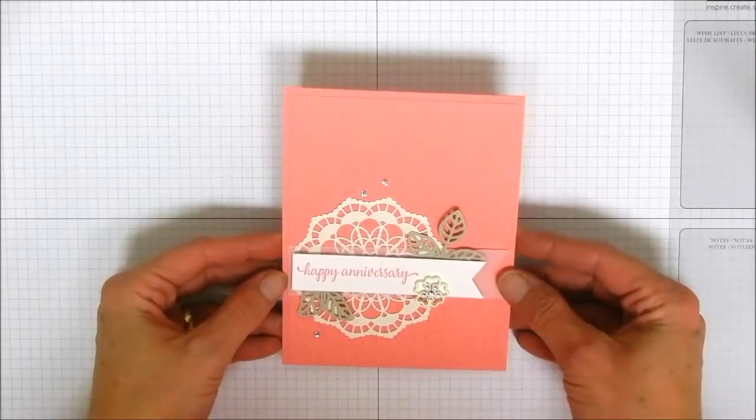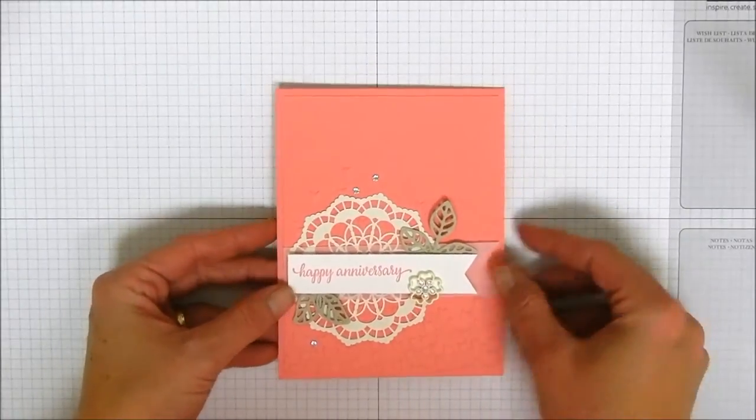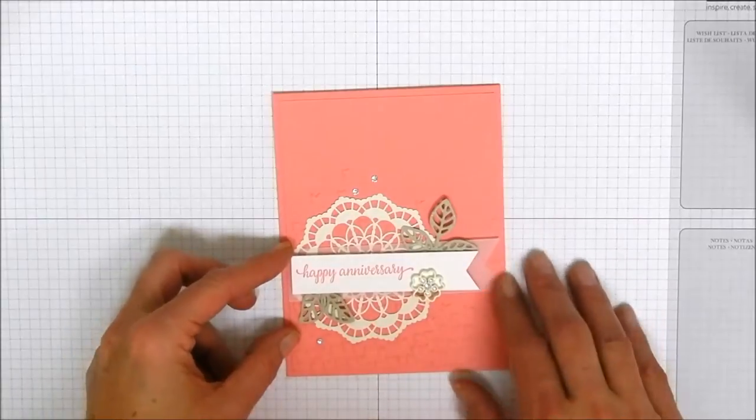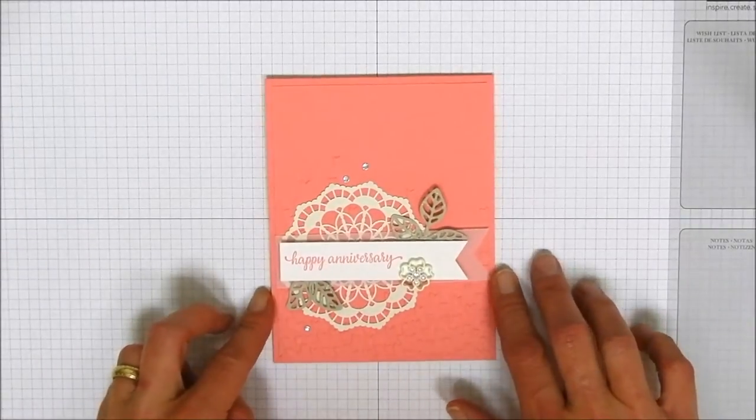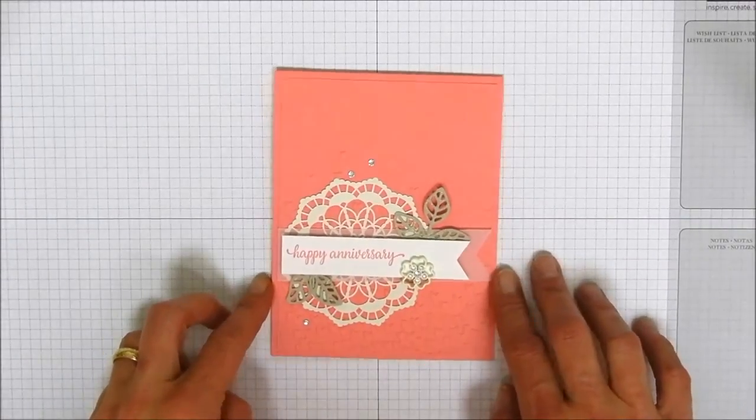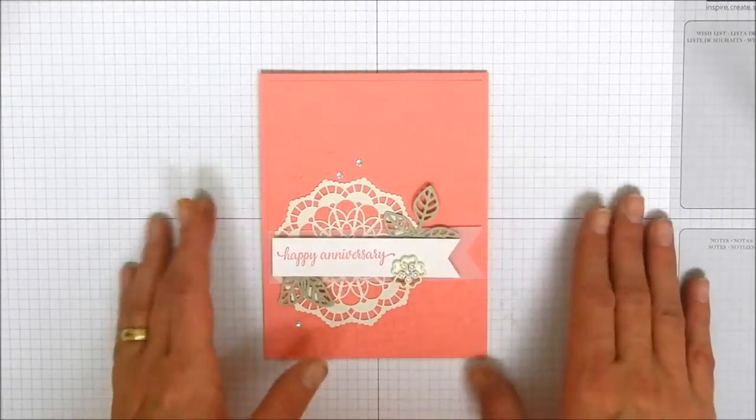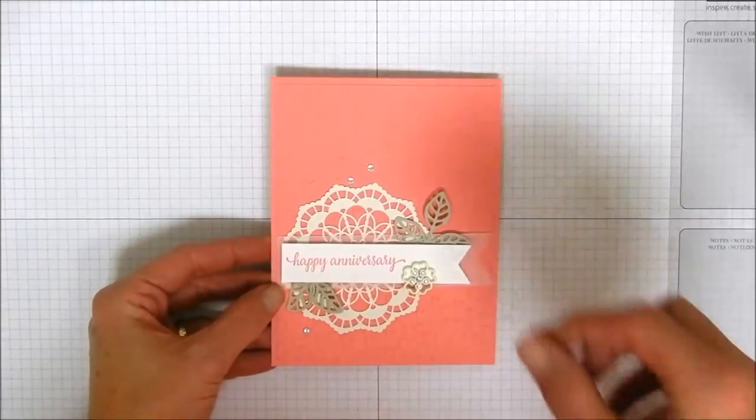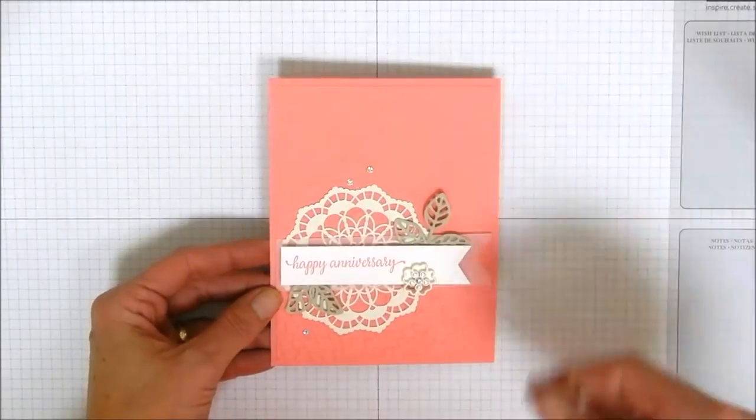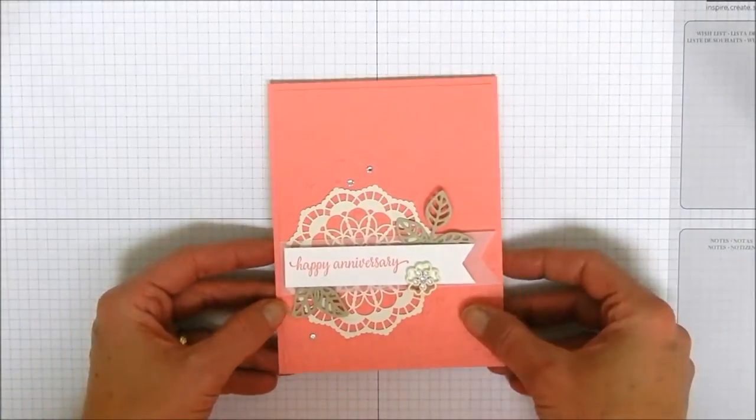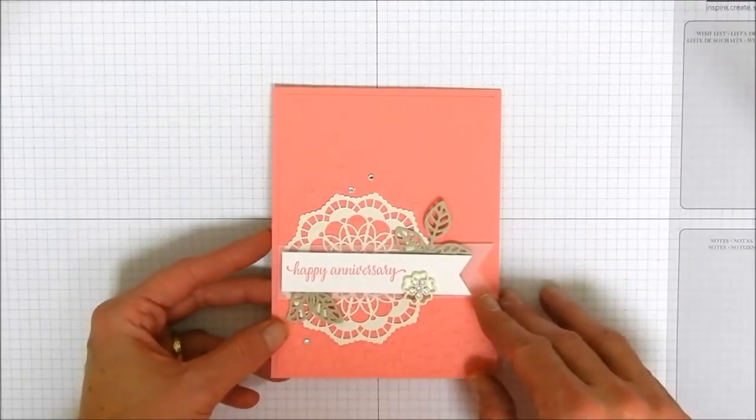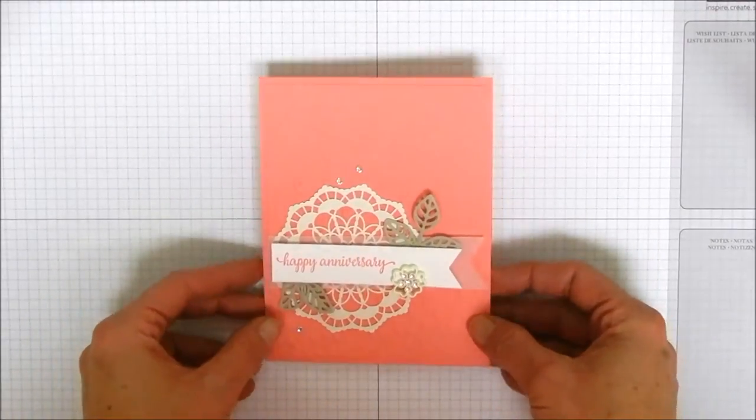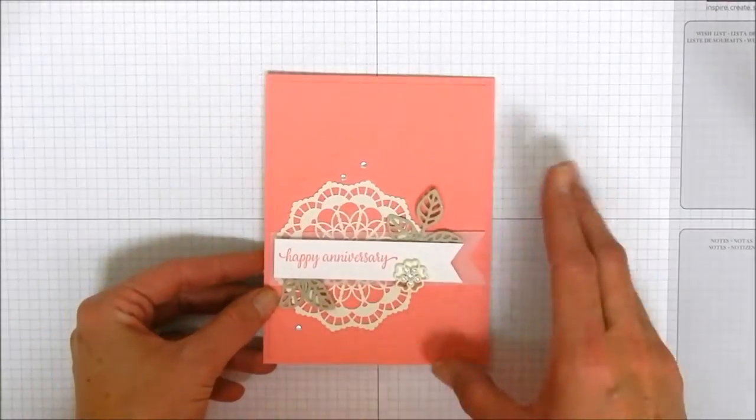Today we are going to be making this pretty card and this uses flirty flamingo cardstock and that's one of our new ink colors for 2016 to 2018. The ink colors always get me. But anyhow, this card was inspired by one that I saw by LiterallyMyJoy.com. She used different colors and she put her sentiment together a little bit differently. So this is kind of my take on that card.